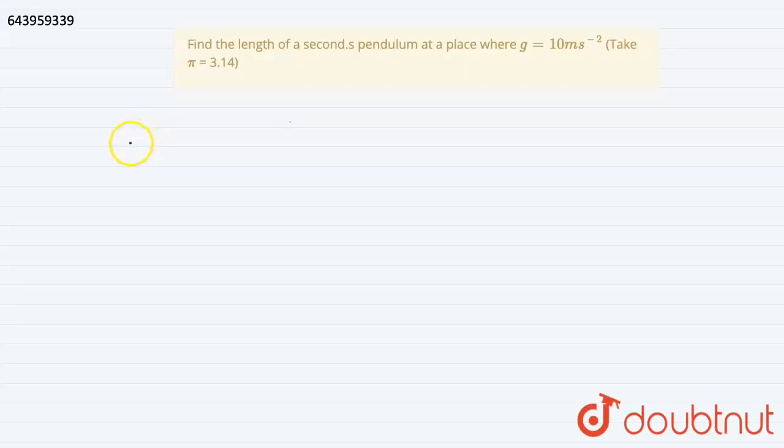So the given question is, we have to find the length of a seconds pendulum at the place where g is equals to 10 meter per second square.